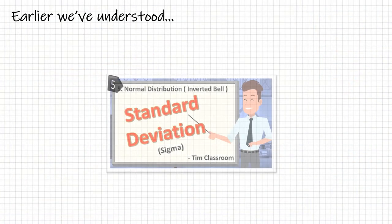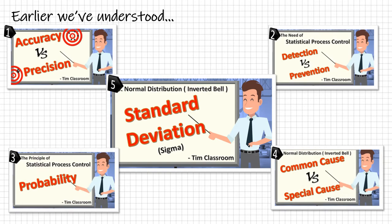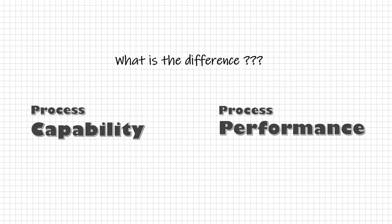Welcome back. Now that we have the knowledge of standard deviation along with the other basic concepts of statistics, we are ready to face one of the most confusing questions. What is the difference between process capability and process performance? Well, believe me, it is super simple if you go by the dictionary meaning of capability and performance. Let's give it a try.